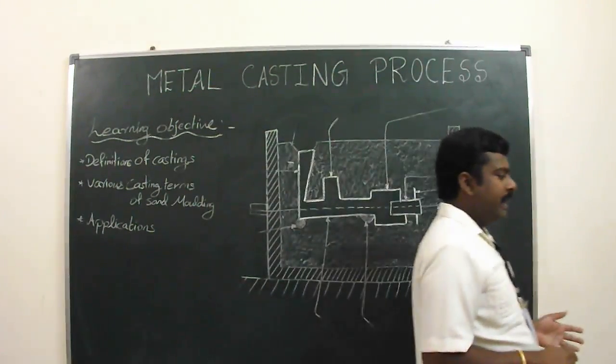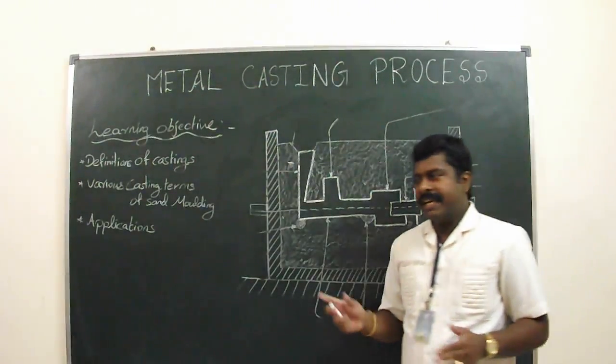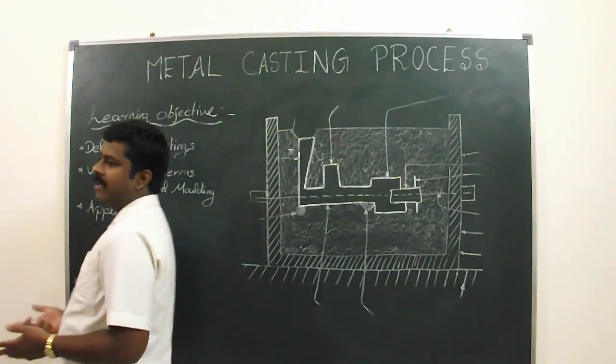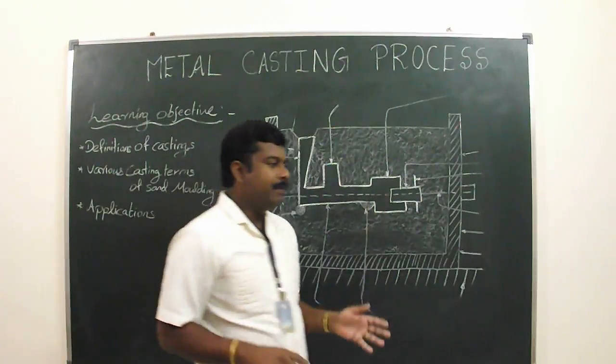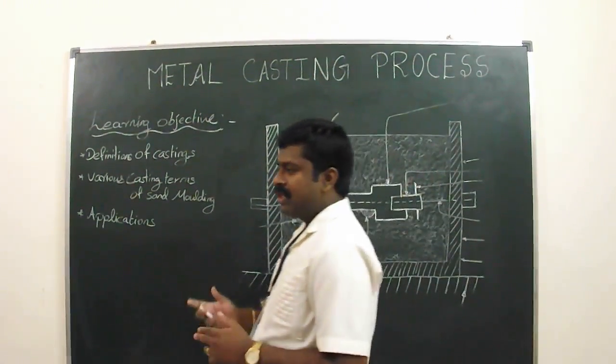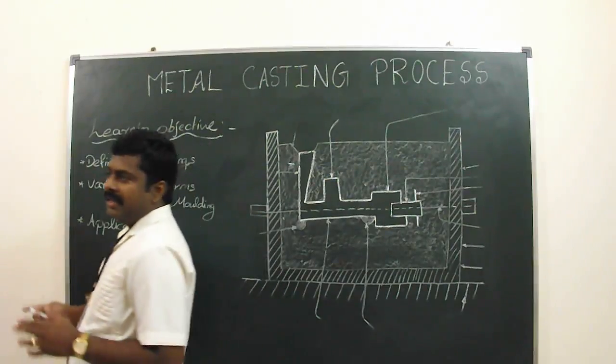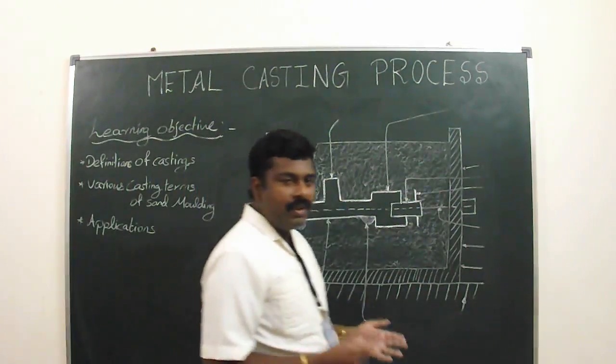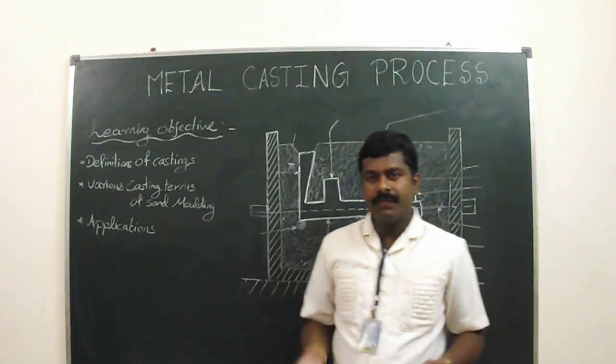After solidification, the desired object is taken out from the mold cavity either by breaking or taking the mold apart. This solidified object is known as casting. The plant where casting is made is known as foundry, and this process is also known as foundry.